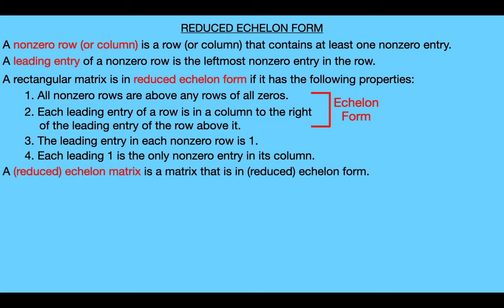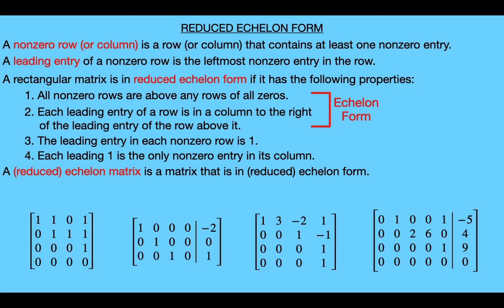When we say an echelon matrix, we just mean any matrix in echelon form. Similarly, a reduced echelon matrix is any matrix in reduced echelon form. So let's look at some examples — we'll consider four matrices and decide if each is in echelon form, reduced echelon form, or neither.